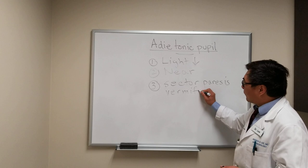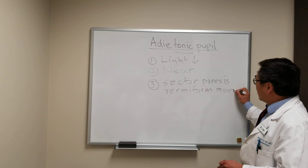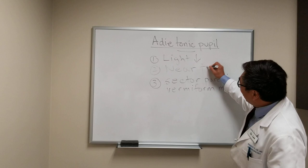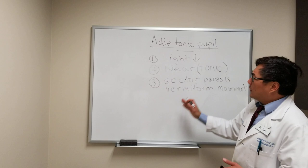When we see the combination of a sector paresis, a vermiform movement, and a tonic reaction of the pupil at near, with a poor or absent light reaction, these are the key differentiating features of the Adie's tonic pupil.